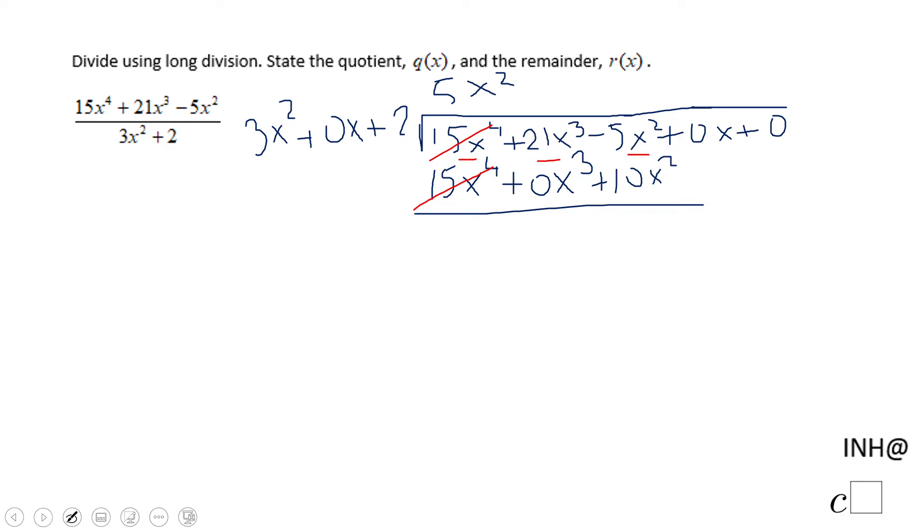And now, like I said, when we see that 0x cubed, that's very good. We're going to have positive 21x cubed minus positive 0x cubed. That will be 21x cubed.